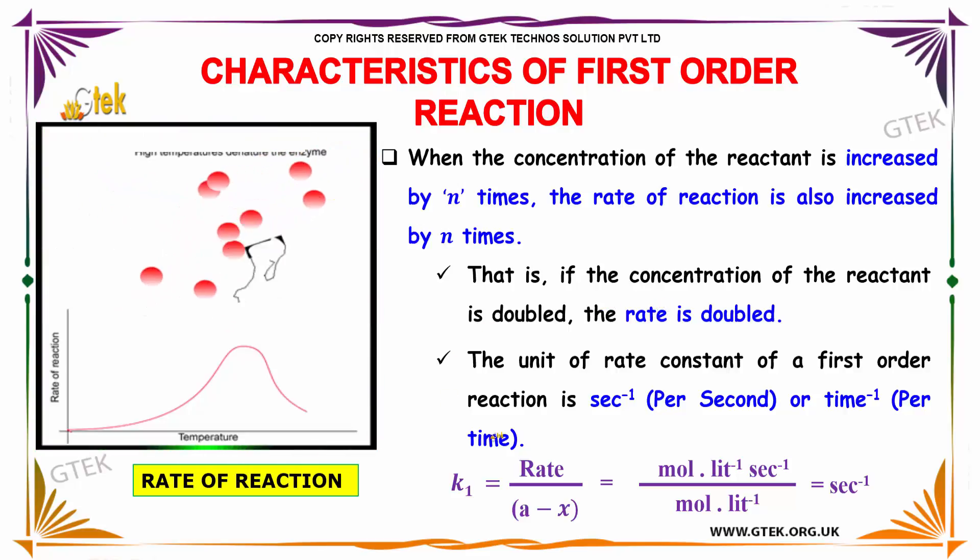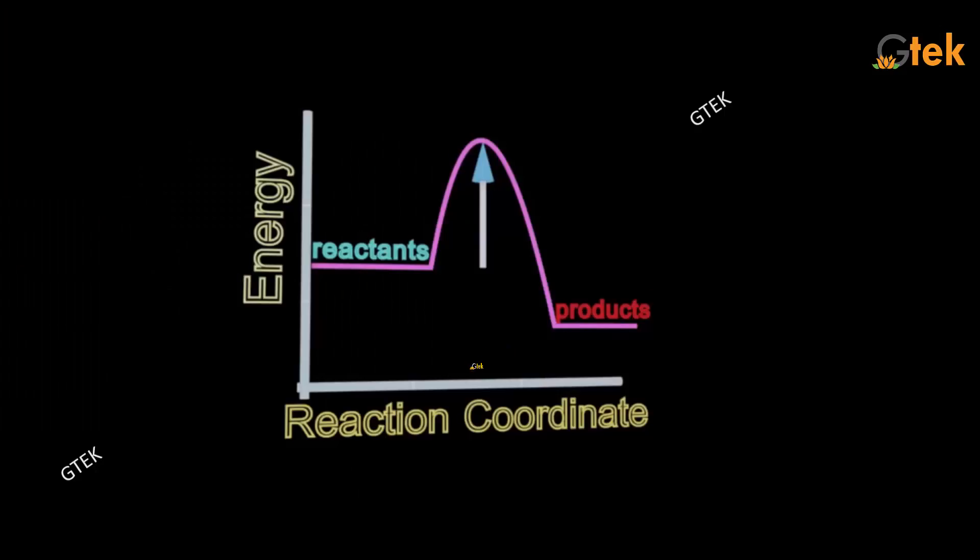The unit of rate constant of a first order reaction is per second or per time. So K1 equals rate divided by (a minus x), which is mole per liter per second divided by mole per liter, giving per second.